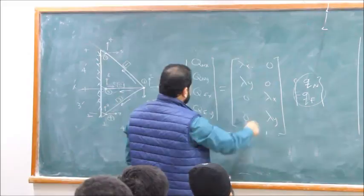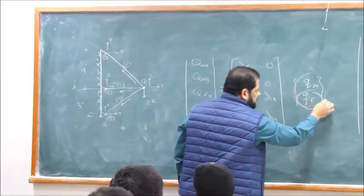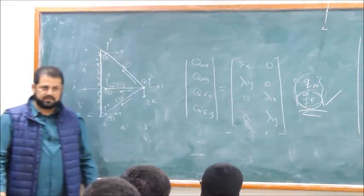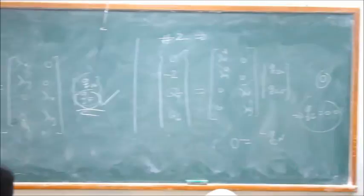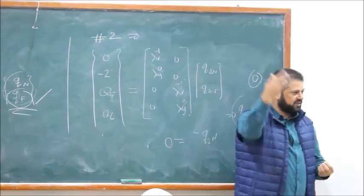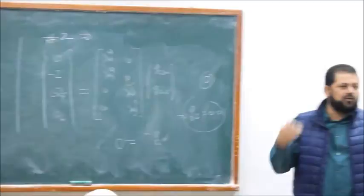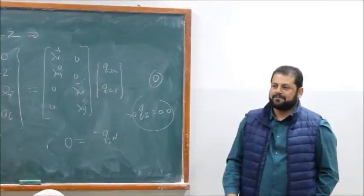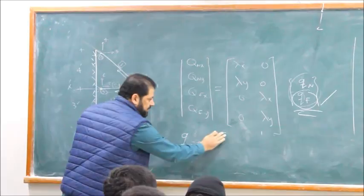You can also write the relationship the other way using the inverse of T-transpose times Q. Now, for each member there is Q_N and Q_F — they will always be the same magnitude. Which is easier to calculate — the near or the far end force? It is better to calculate Q_F. When you calculate Q_N and Q_F they will be equal, and it is always preferable to compute Q_F.